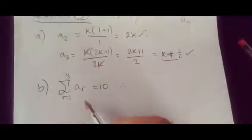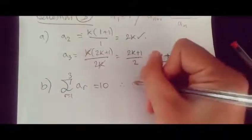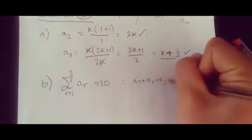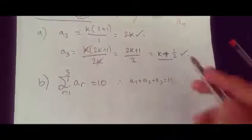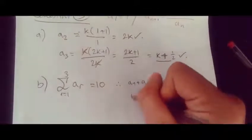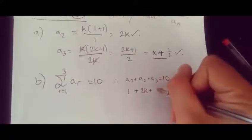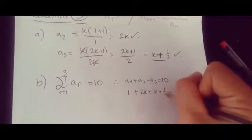So what do we do? We find the first three terms: a1 + a2 + a3 equals 10. Now plugging in every single term here, so a1 is 1, a2 is 2k, and a3 is k + a half, equals 10.